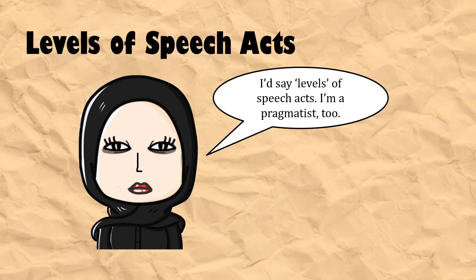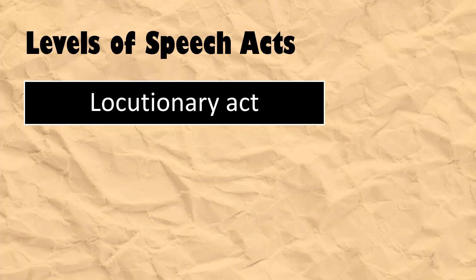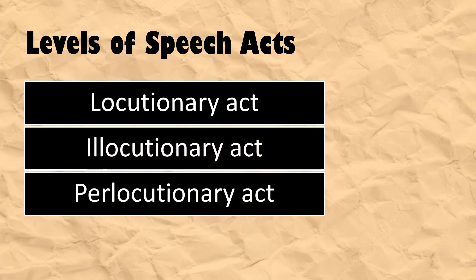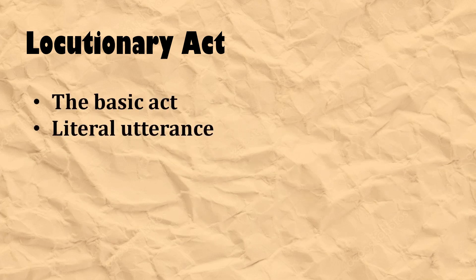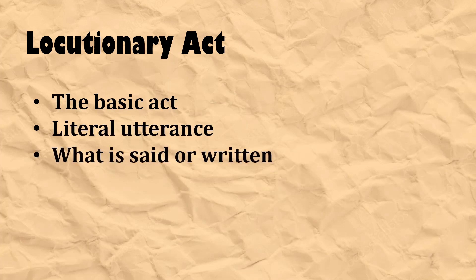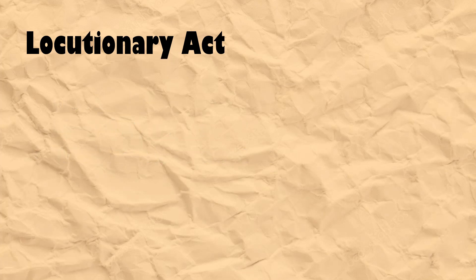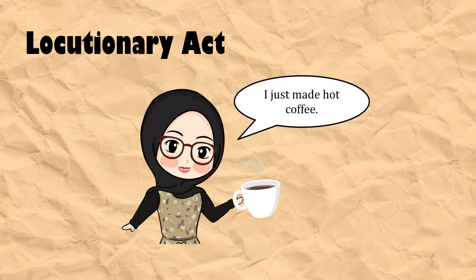I'm going to explain the levels so elaborately that you'll understand why I name it levels of speech acts. There are three levels of speech acts, namely: locutionary act, illocutionary act, and perlocutionary act. The first level, the locutionary act, is the basic act. It is the literal utterance, or exactly what is said or written. In this level, when I tell you 'I just made hot coffee,' it means I make a statement that I made coffee. That's it. The utterance is in the form of a statement, a positive sentence, in simple past tense.